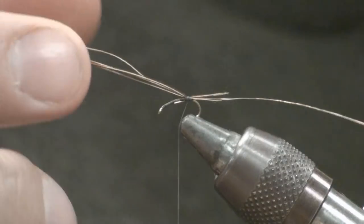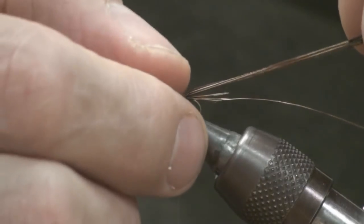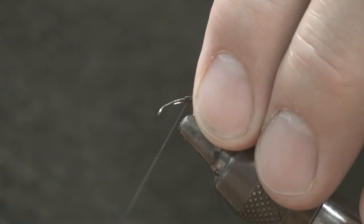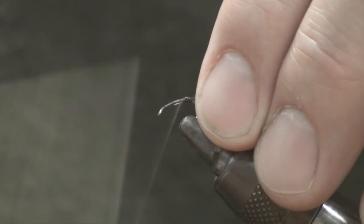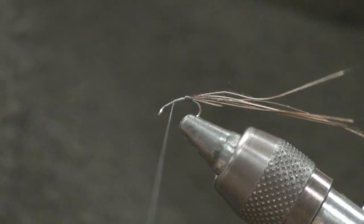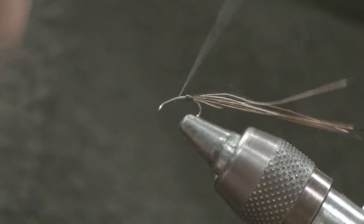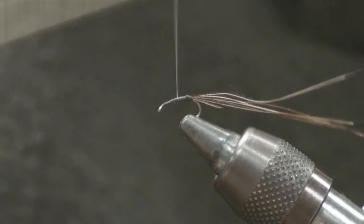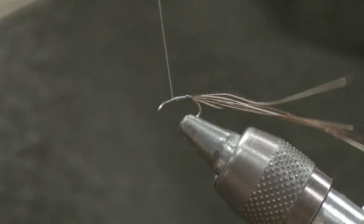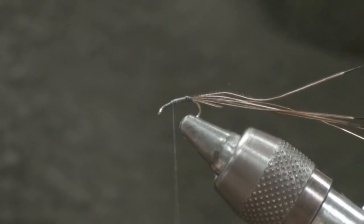Now what I like to do is I like to take my pheasant tail and just double it back over itself so I don't have a gap when I start wrapping that forward as my body. And then I'll just bring my thread forward and I do build up the body a little bit because where I doubled that pheasant tail back over itself it's going to be a little bit thicker so I just try and even it out with thread. Stop about a third of the way back from the hook eye.